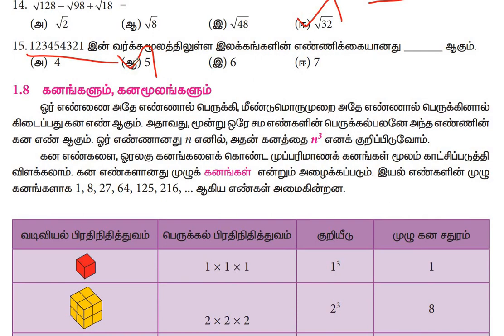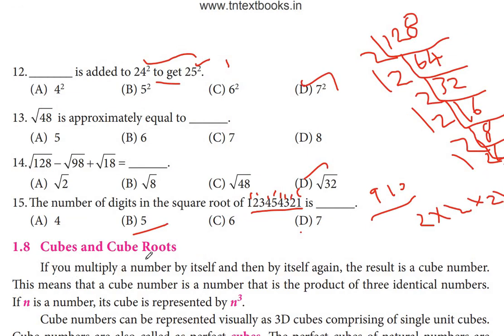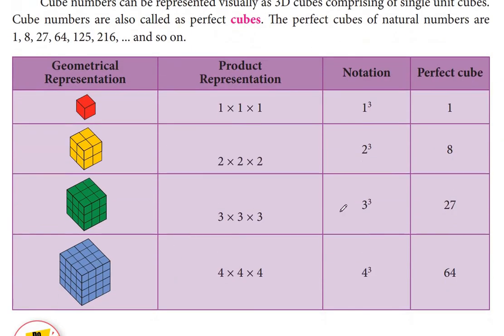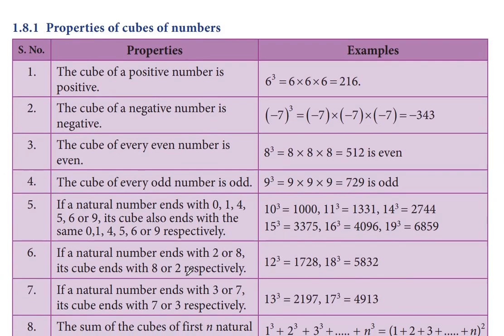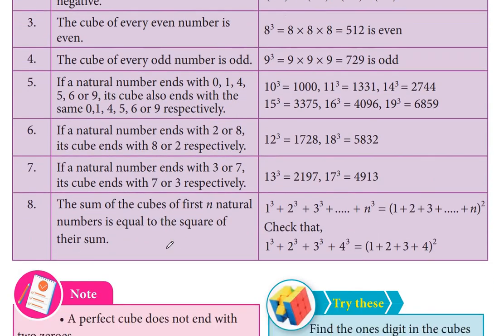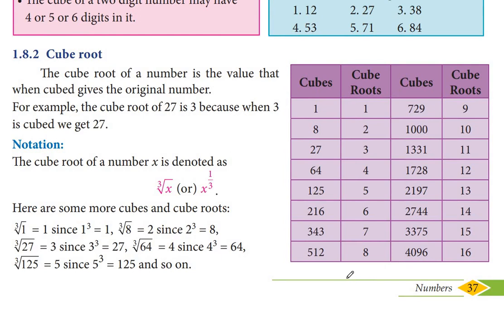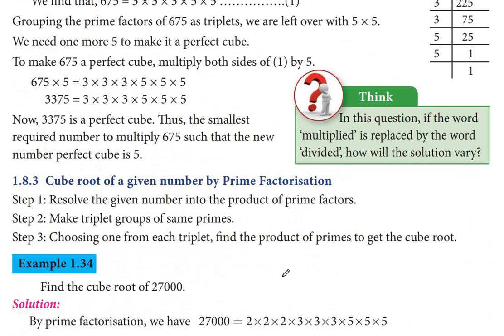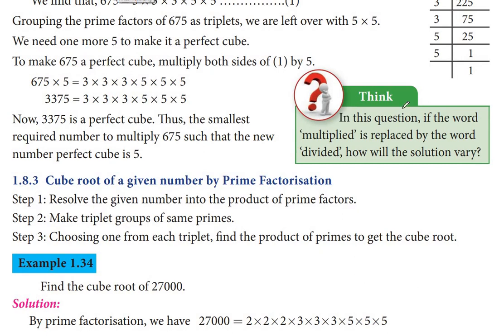Next is squares and square roots — GANANGAL and GANAMOOLANGAL. Here are cubes. This covers squares, doubles, and triples. Let's check the rules. We have a lot of details. If you follow them, it will be very easy for you to get a good mark. Thank you.